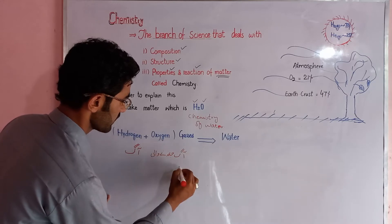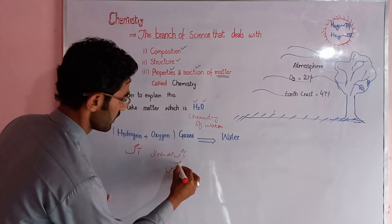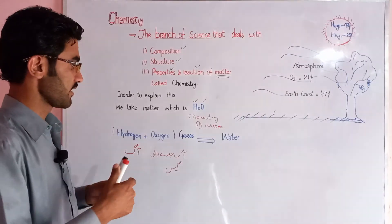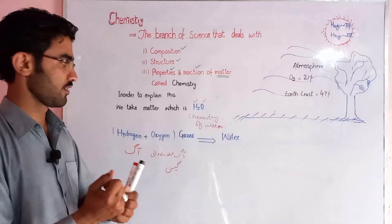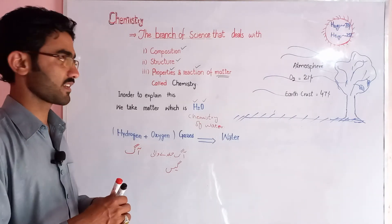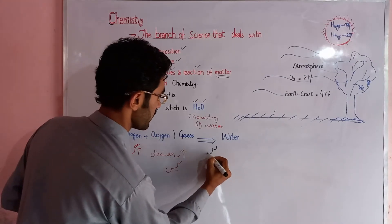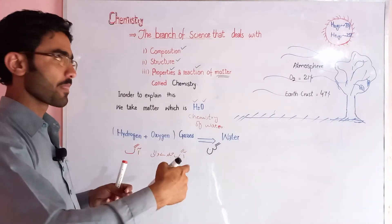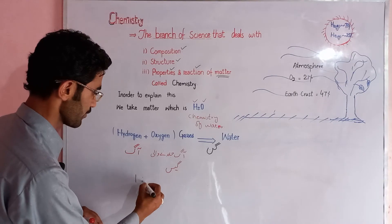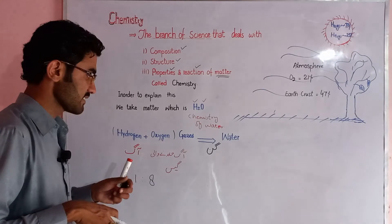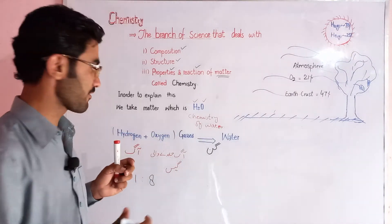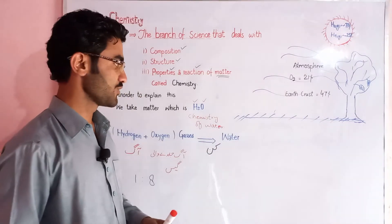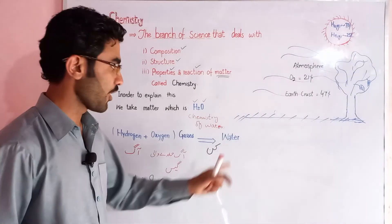تو اکسیجن ایک ایسا matter ہے جو آگ جلانے کے عمل میں استعمال ہوتا ہے — آگ جلانے والی gas۔ اب یہ دو matters — hydrogen اور oxygen — کائنات کی خلق ہوتے ہوئے اللہ تعالیٰ کے حکم سے، کن کے لفظوں میں، ملنے کا حکم ملا۔ یہ gases کیسے ملیں یہ بھی chemistry ہی بتاتی ہے — یہ gases one-to-eight ratio by mass combine ہوئی تھیں۔ ان gases کی properties سمجھ لی، یہ دو matters in form of gas combine ہو کر ایک اور matter — water — وجود میں لائے۔